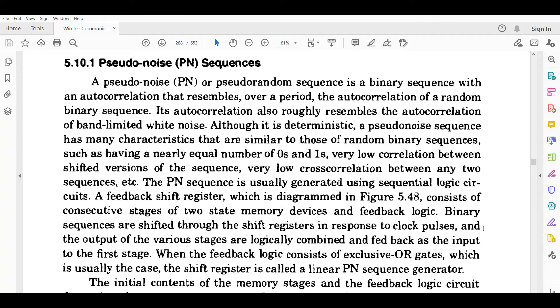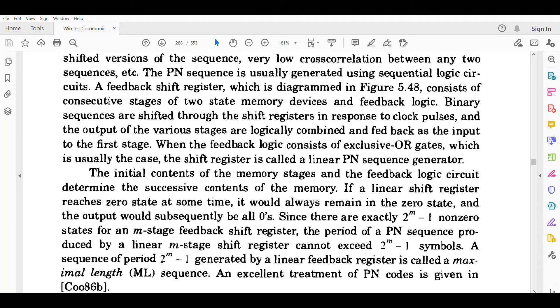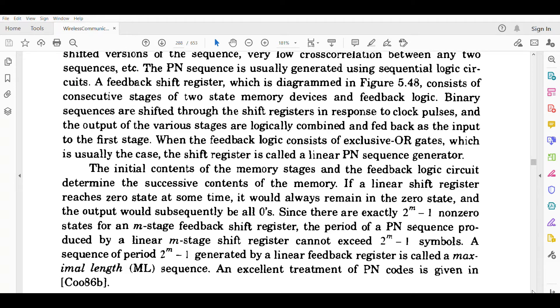Binary sequences are shifted through the shift registers in response to clock pulses, and the output of the various stages are logically combined and fed back as the input to the first stage. When the feedback logic consists of exclusive-OR gates, which is usually the case, the shift register is called a linear shift register.